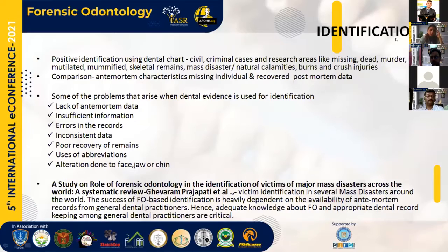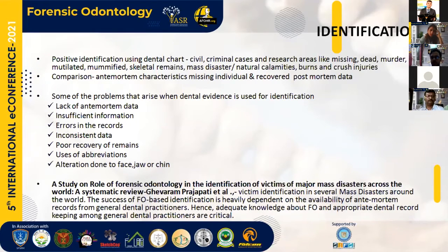Next is identification, primarily using the dental chart. The dental chart plays a major role in civil cases, criminal cases, mass disasters, natural calamities, burns, etc. There should be proper antemortem data. The major factor lacking in identification is the absence of proper antemortem data — including insufficient information, errors in records, poor recovery of remains, no proper chart maintained, use of abbreviations, and alterations done to the face, jaw, or chin through plastic surgery or surgical corrections. These are crucial factors in identification.